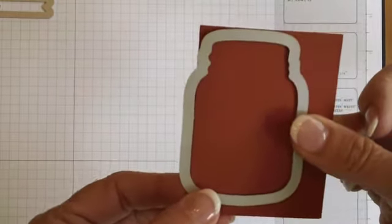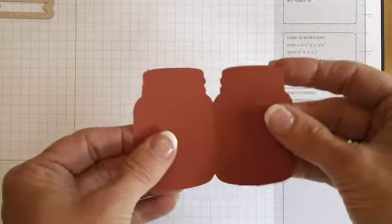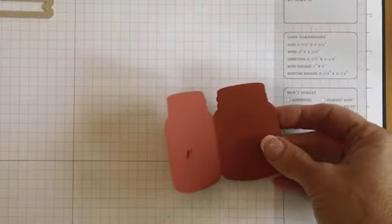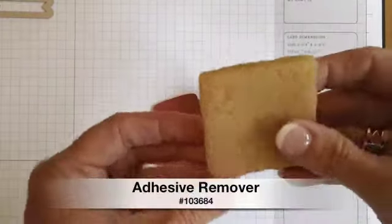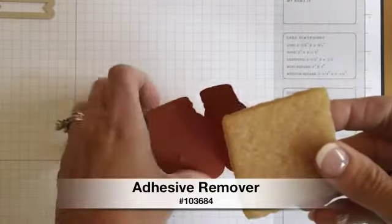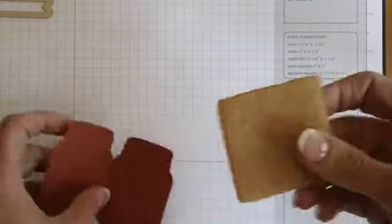So once you roll it through the big shot it's going to turn out like this and you'll need to open it back up and you may want to use this little rubber square to get your Dotto adhesive residue off the inside of the gift tag. Okay that helps, that works out really well.